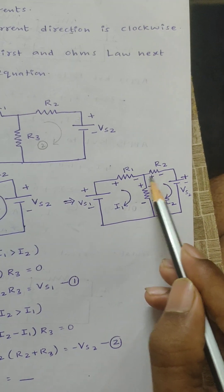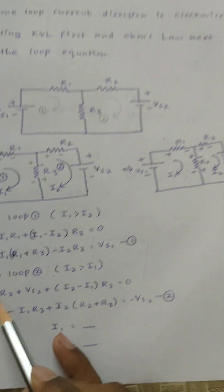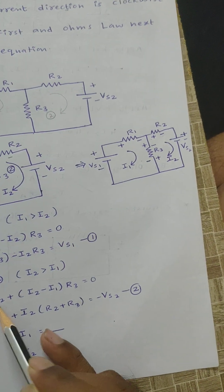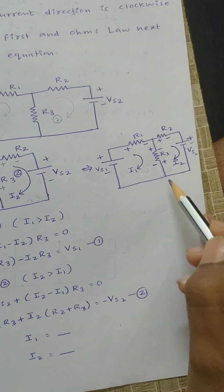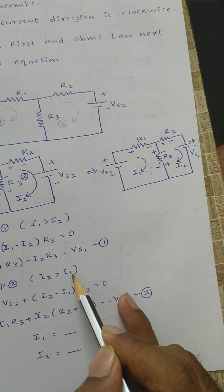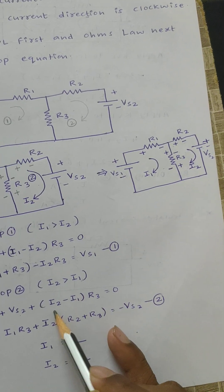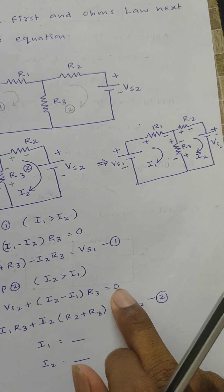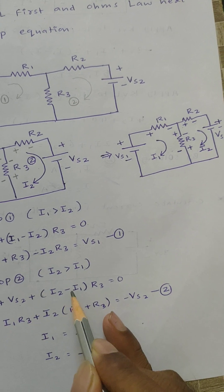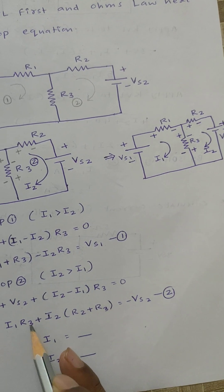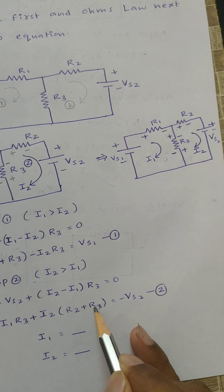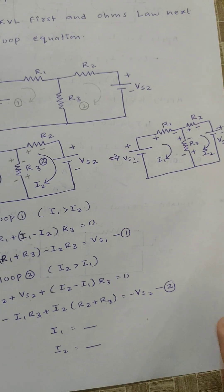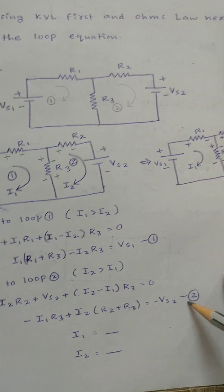Similarly, apply KVL to loop two. For the second loop, if loop two current magnitude is greater than loop one, the current through R3 is i2 minus i1. The equation becomes: (i2 minus i1)·R3 plus i2·R2 equals minus V_s2 — equation two. By solving equation one and equation two we will get i1 and i2.